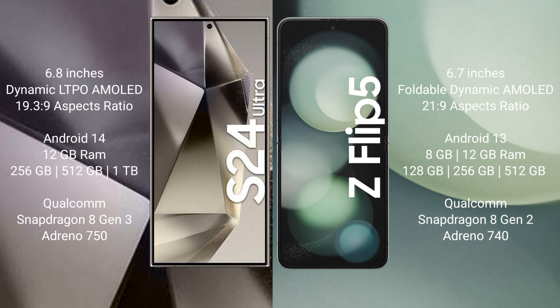The Samsung Galaxy S24 Ultra runs on the Android 14 operating system, while the Samsung Galaxy Z Flip 5 runs on the Android 13 operating system. The Samsung Galaxy S24 Ultra comes with 12 GB RAM.